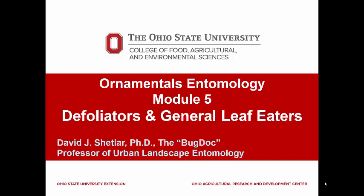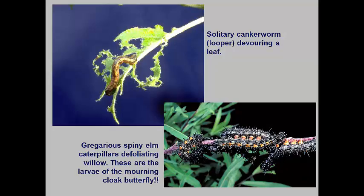Others have adults that will lay dozens to hundreds of eggs on a single plant. Many of these species are gregarious, with the larvae remaining together over much of their life cycle. The horde of larvae can defoliate large portions of a plant in a short time. Many leaf eaters can be gregarious when young and become solitary when in the last few instars.